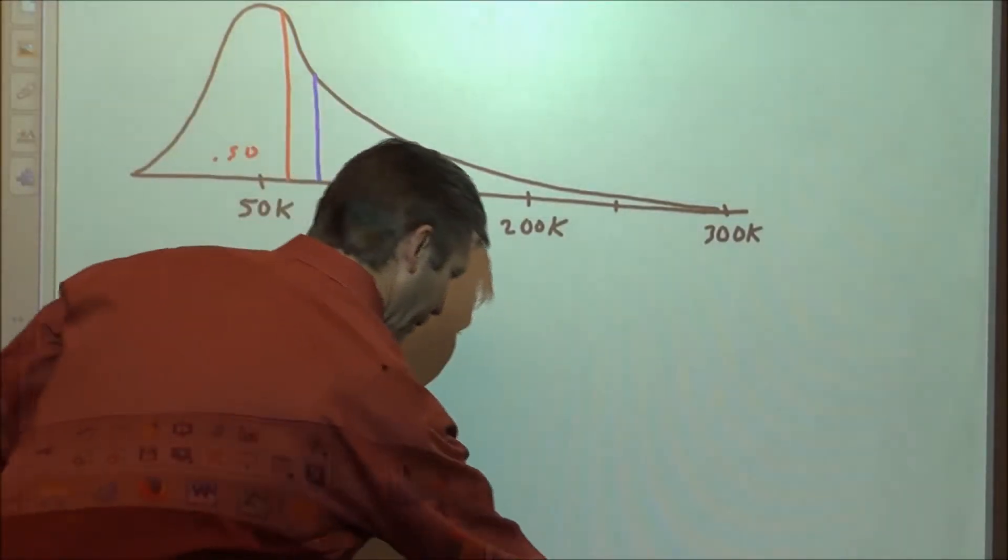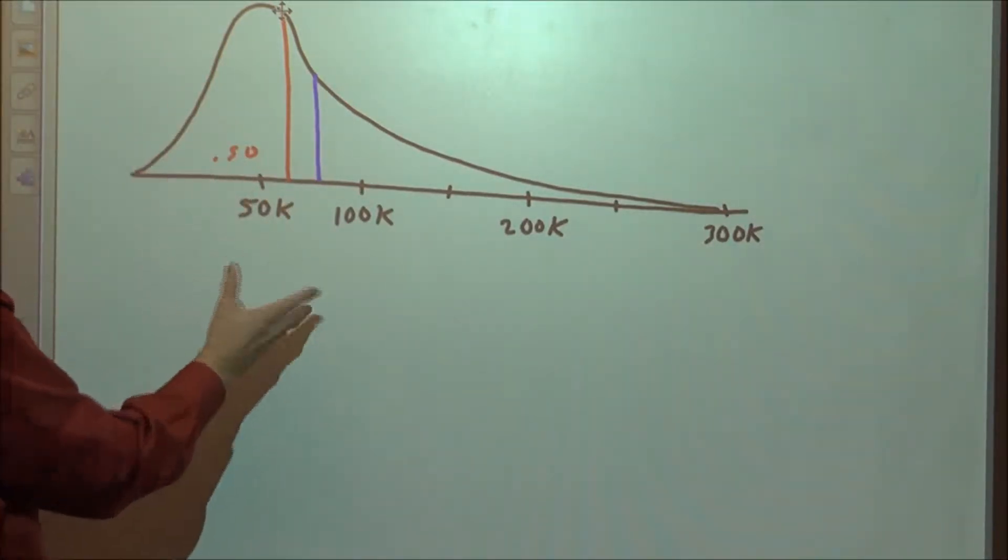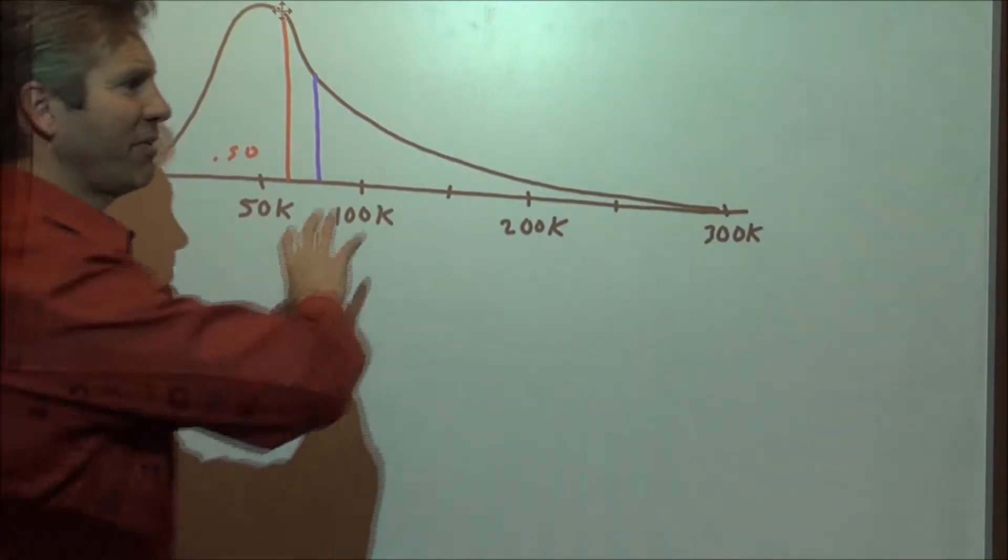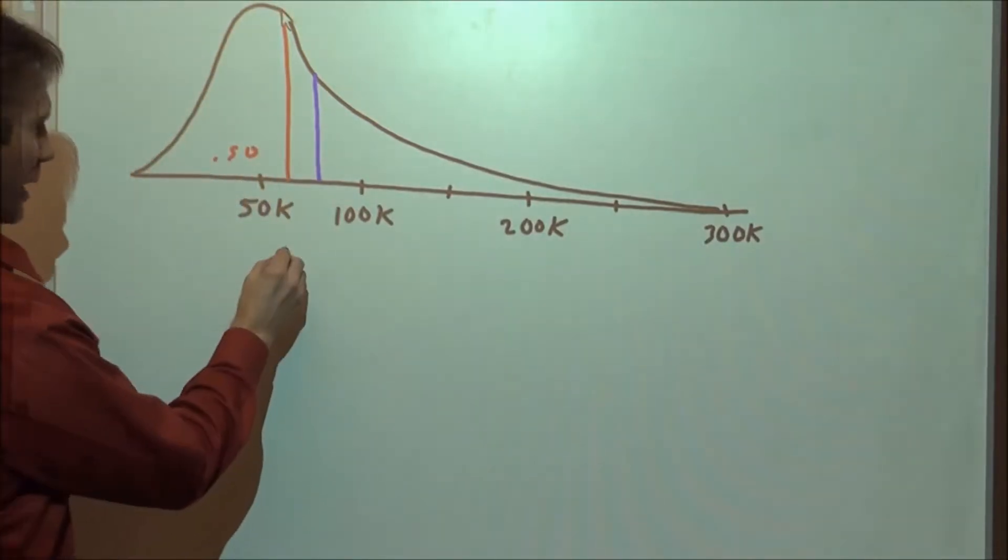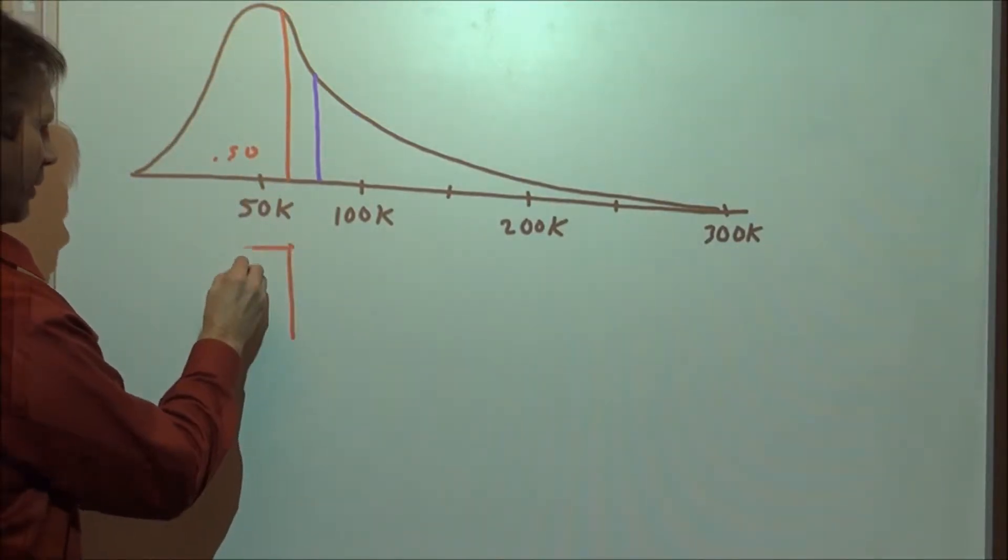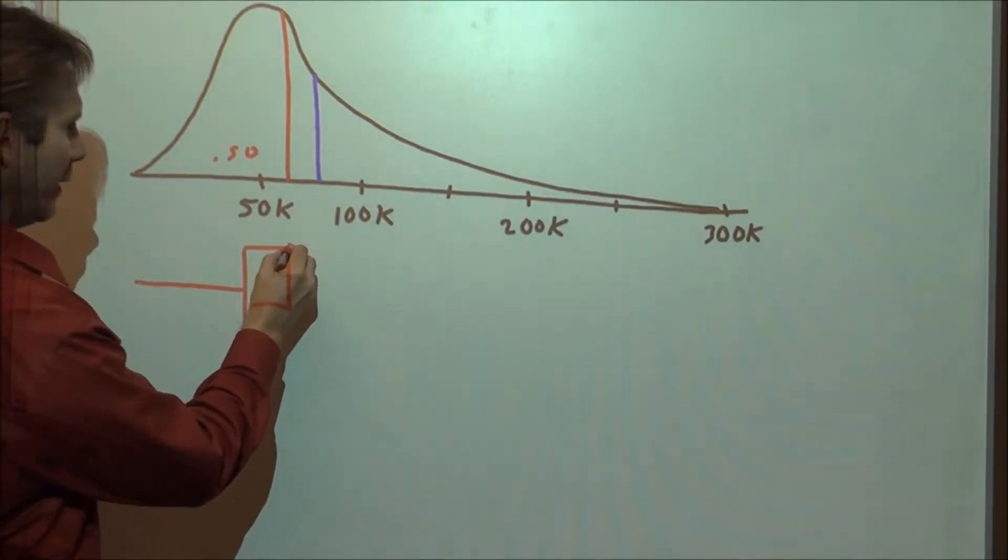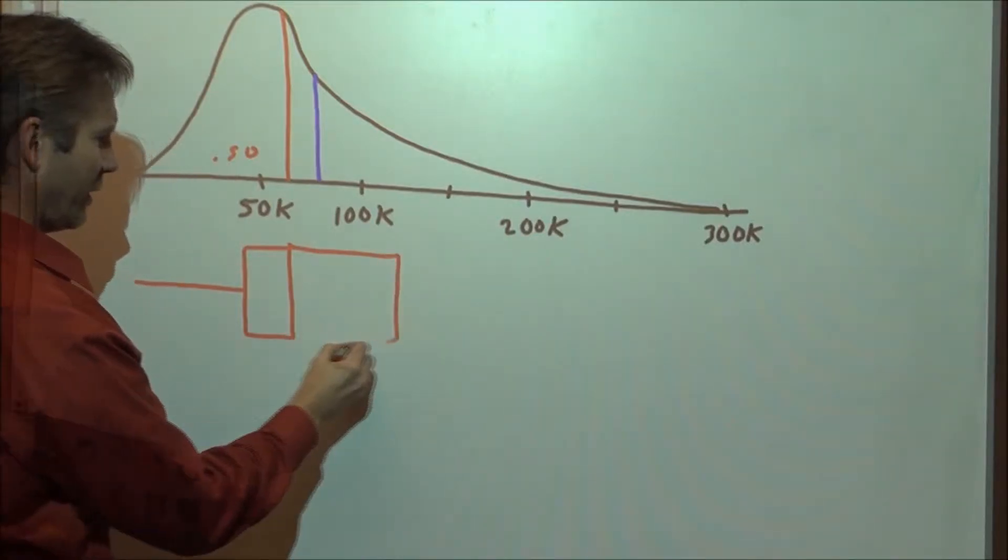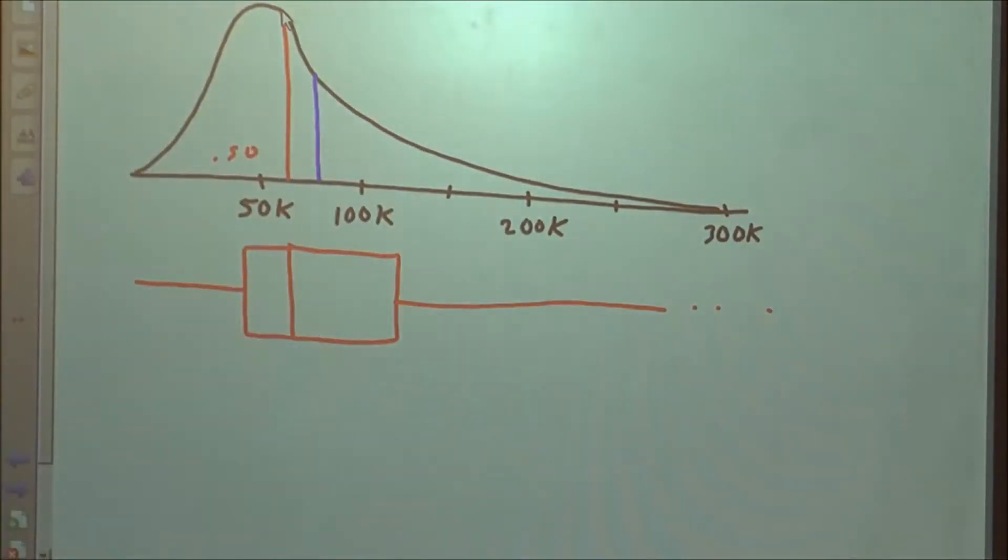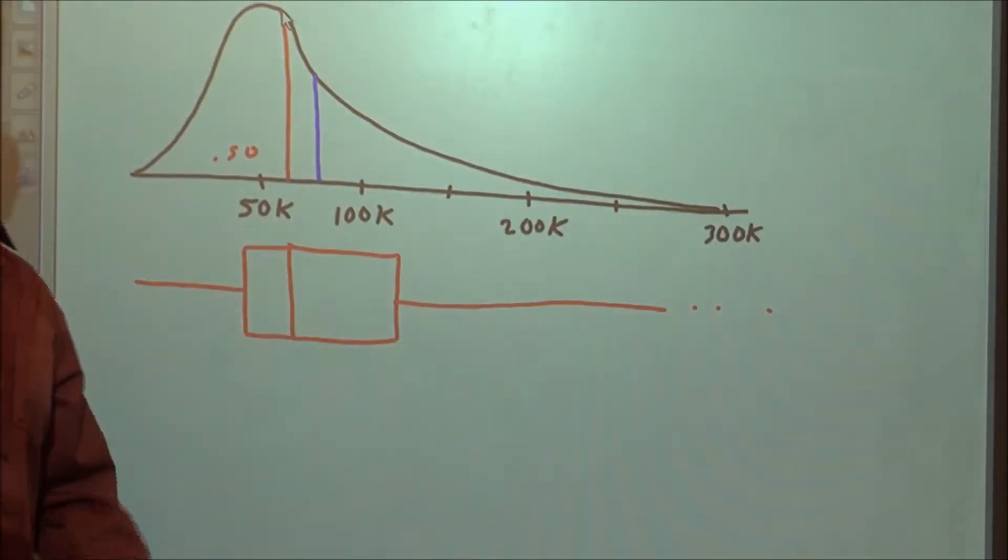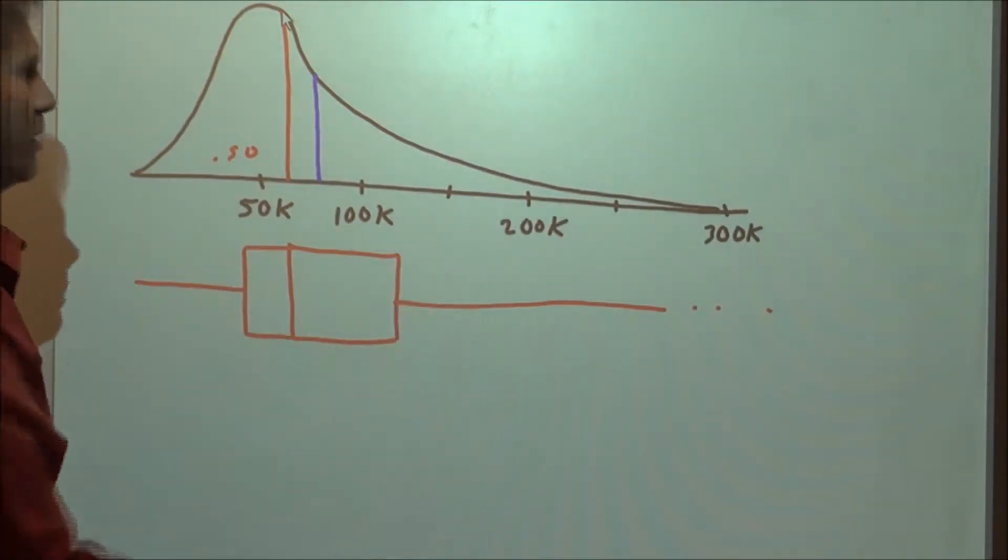So we're going to report for the measure of center the one of the two measures that's not affected by the higher scores. That would be the median. So let's make a box plot. Here's the median, the first quartile down here, the lowest score here, the upper quartile, and extreme scores up here. That tells us don't report the mean, don't report standard deviation because those are affected by extreme scores.